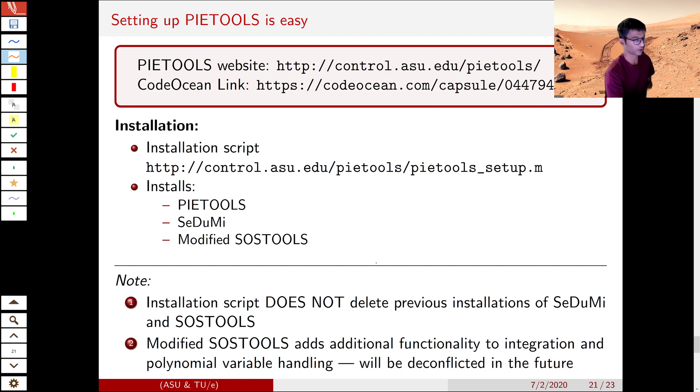To download PIETOOLS, you just have to visit this website and download the script file. Once you do that, you run it in the MATLAB and it automatically downloads the relevant files and sets up the path as well. If you want to test it online, you can always use the CodeOcean link provided here to run the tests online.